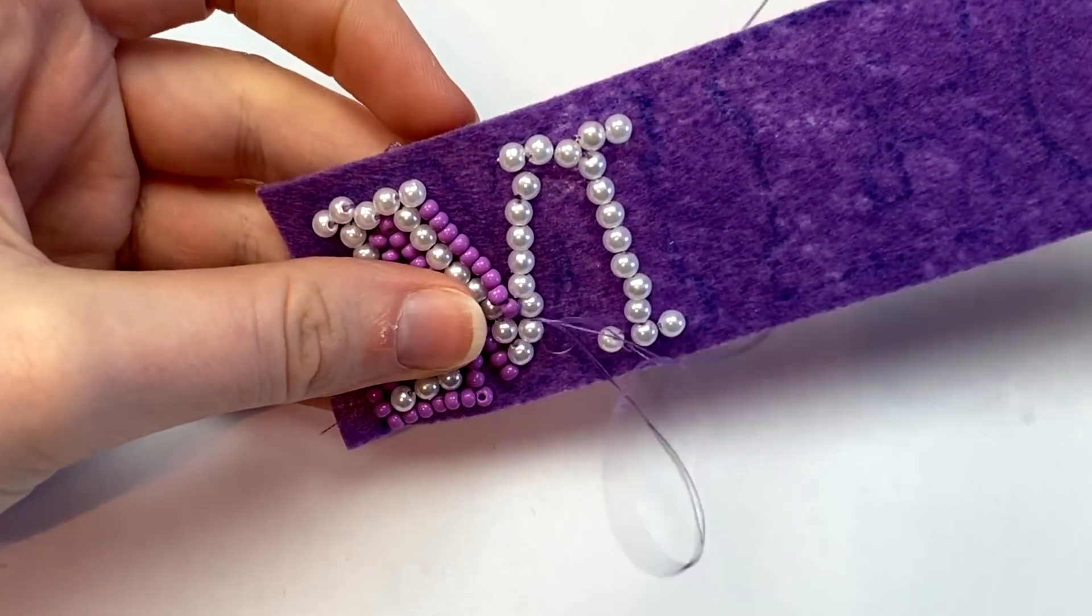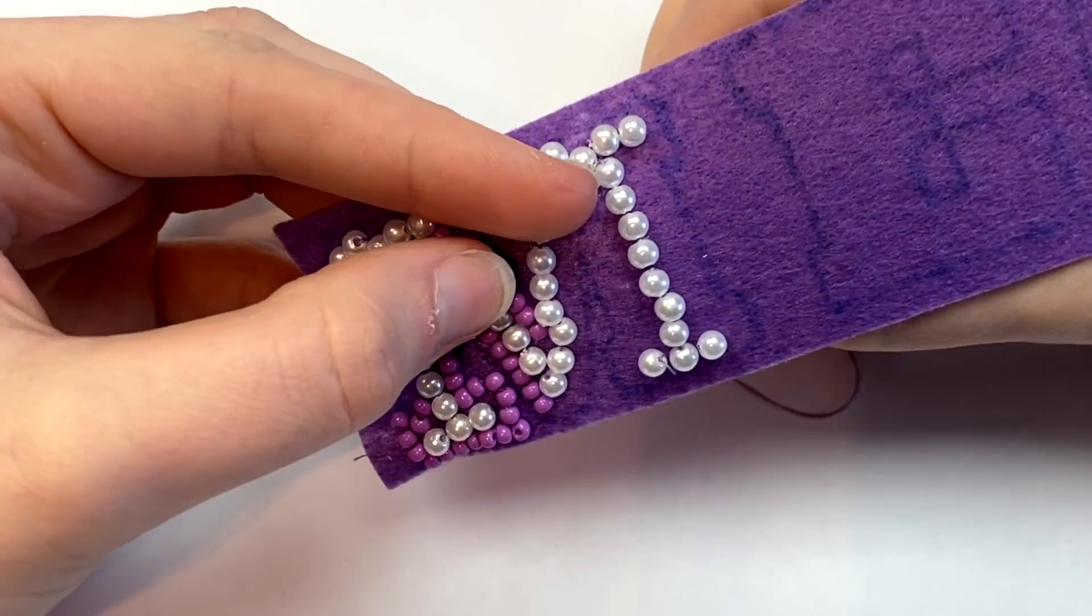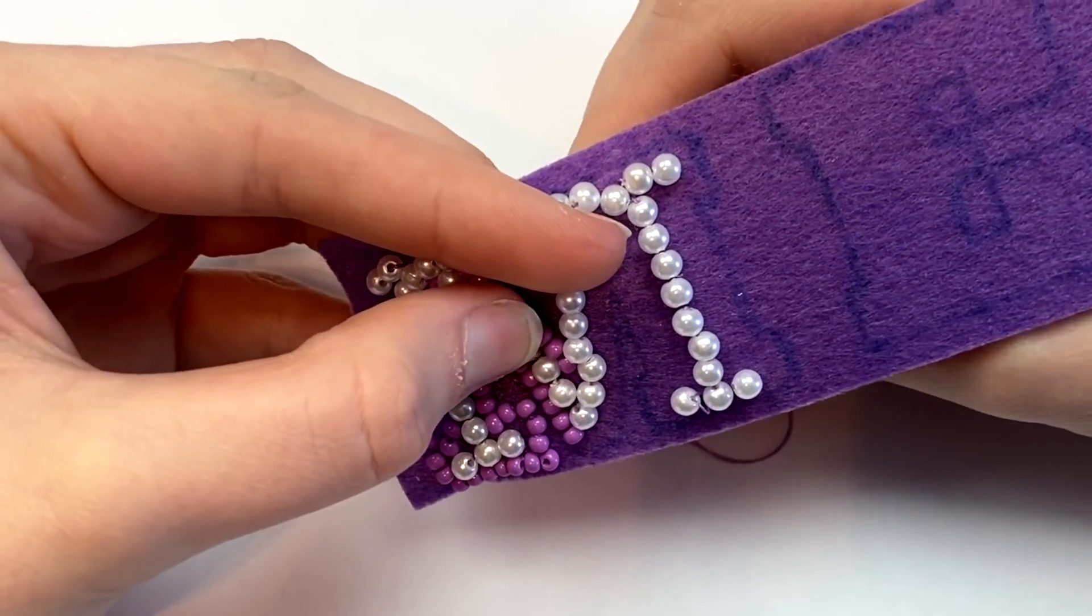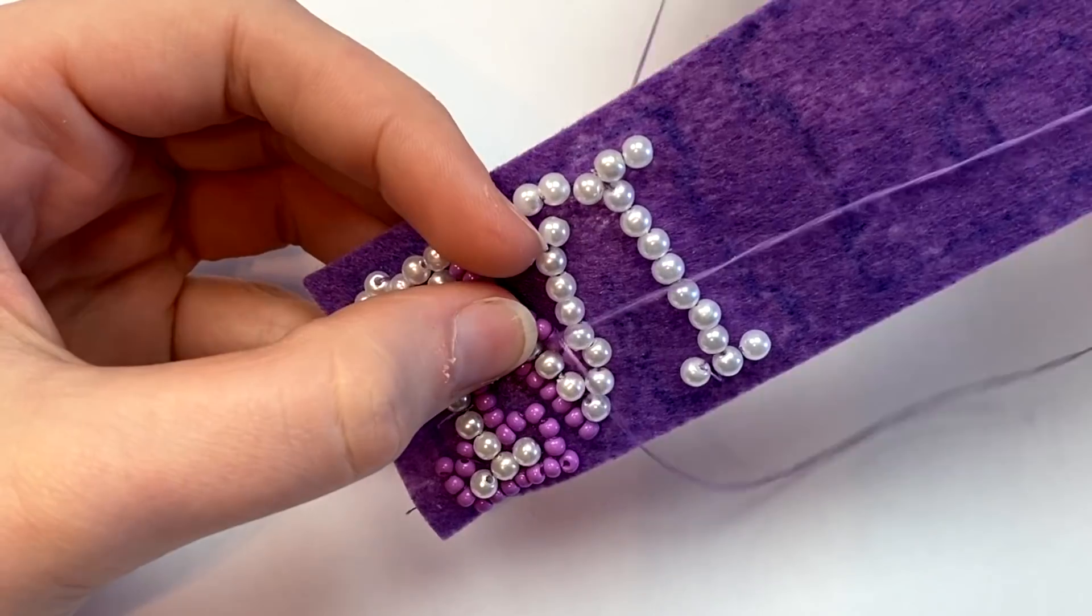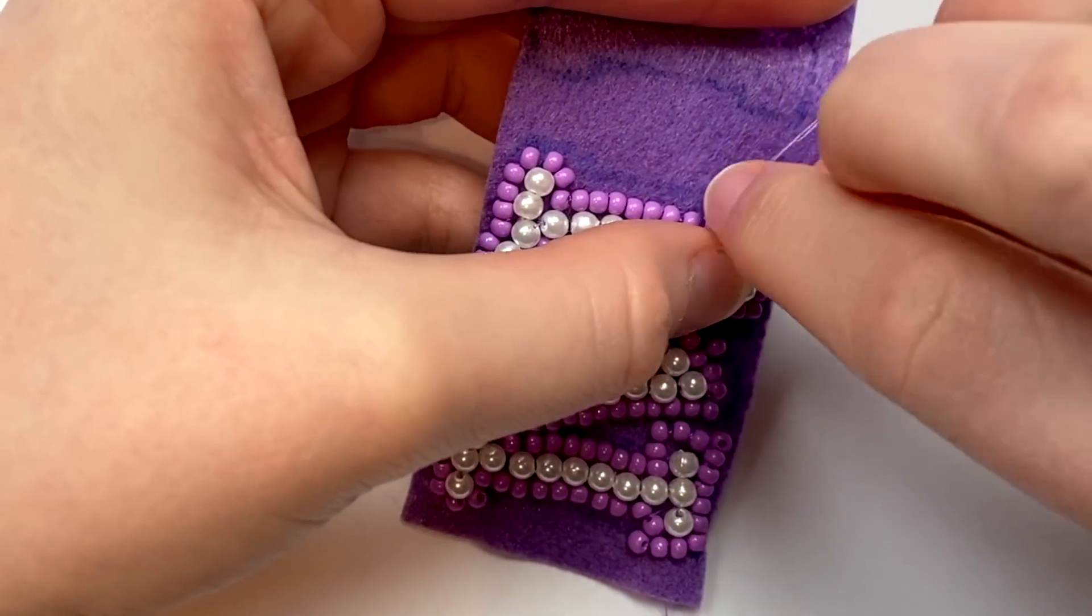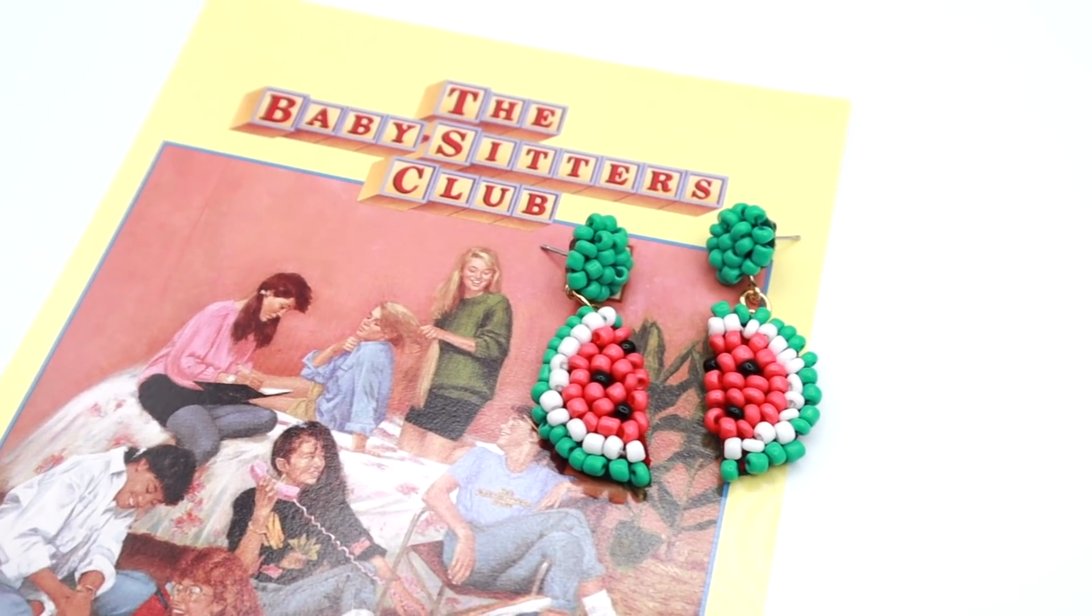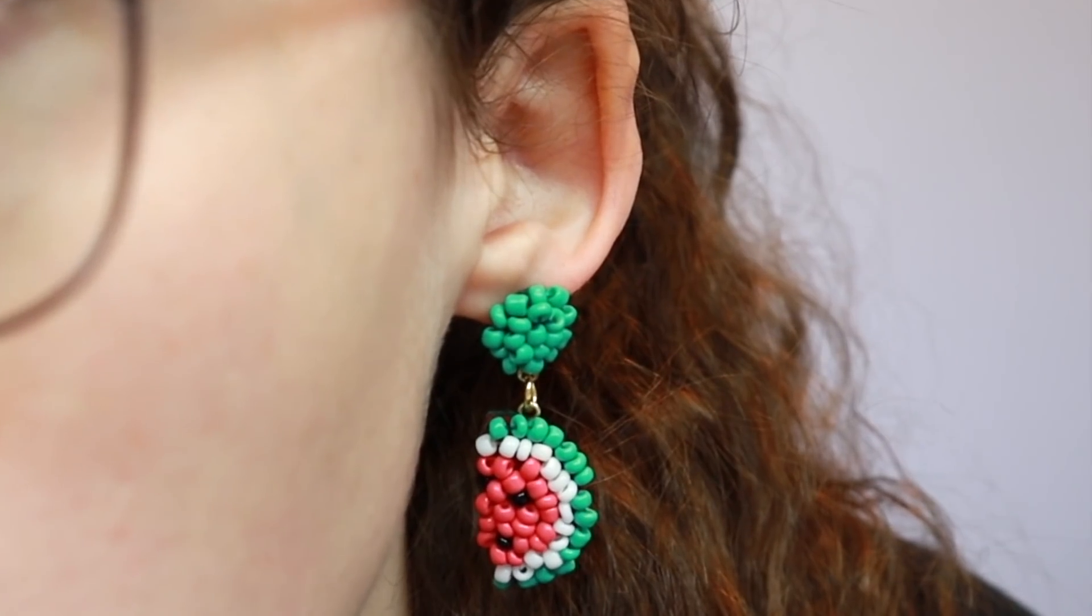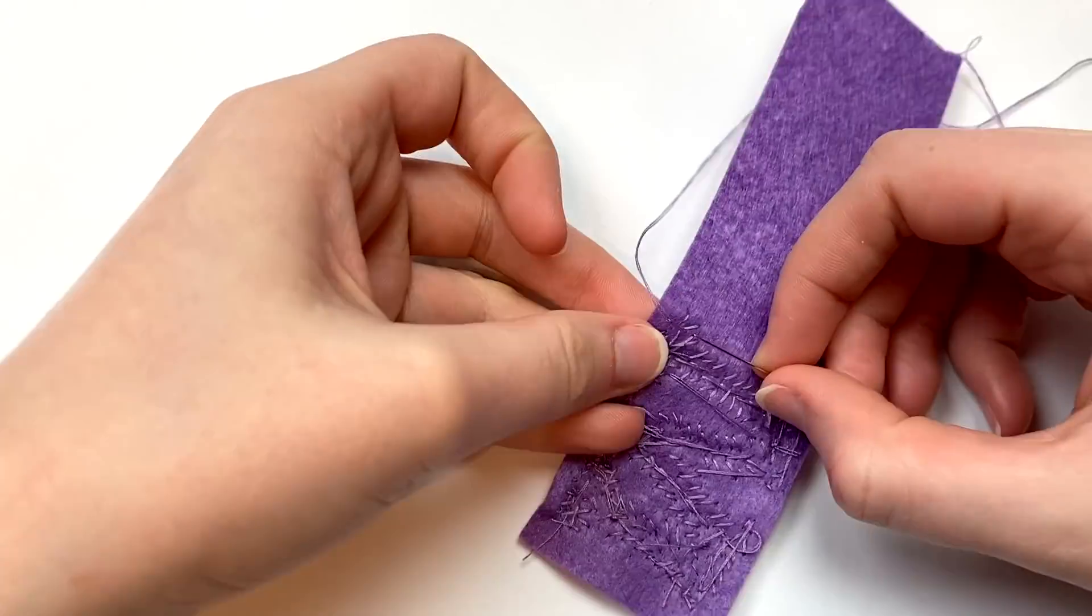I know that this isn't the easiest thing to see, so here's a diagram that can hopefully explain it a little better. Keep adding on more beads until you fill up the entire letter. Of course you don't have to do letters, you could do any shape that you want, although I definitely recommend keeping it simple at least for your first one. If you don't want to make patches, you can also use this technique to make jewelry. I used a similar process to create these watermelon earrings in a video that I did last year. Once all the beads are sewn on, flip it over to the back and tie off your string.